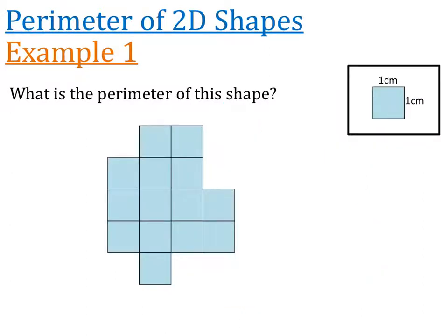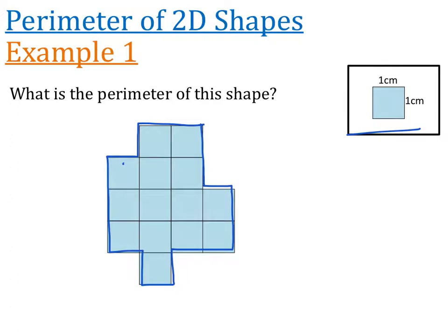This question has no numbers on the shape, but the key tells us that each side of the small blue squares is 1 centimetre. So we count how many of those small 1 cm lines make up the perimeter of the shape, tracing around the outside. Counting gives us 18 small sides, so the perimeter of this shape is 18 centimetres.